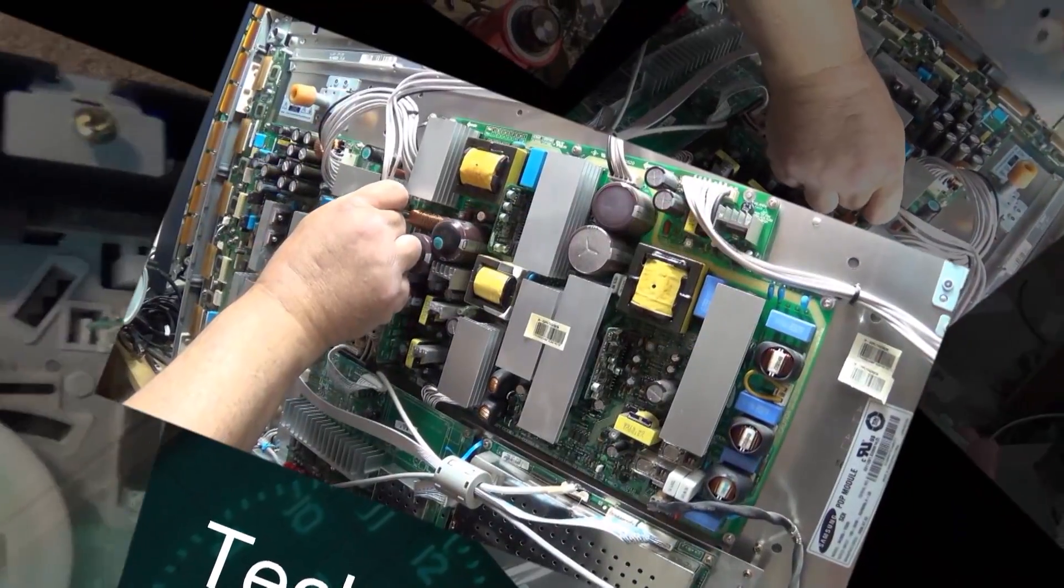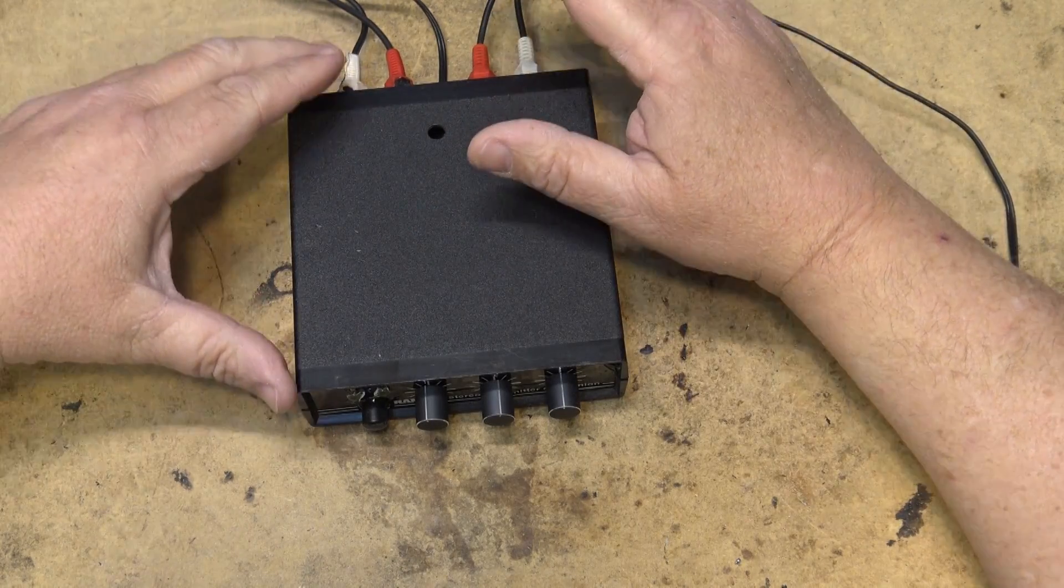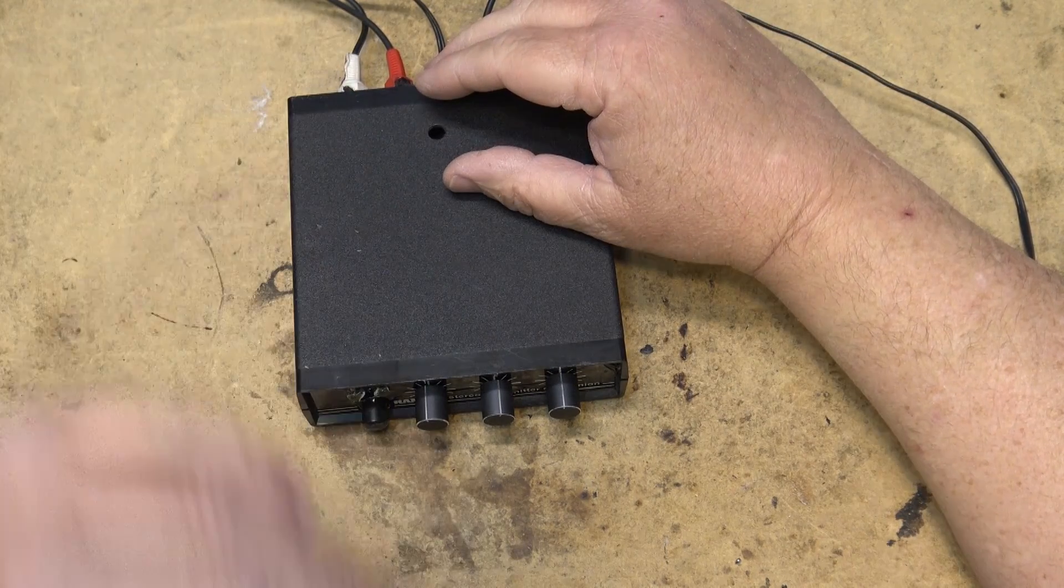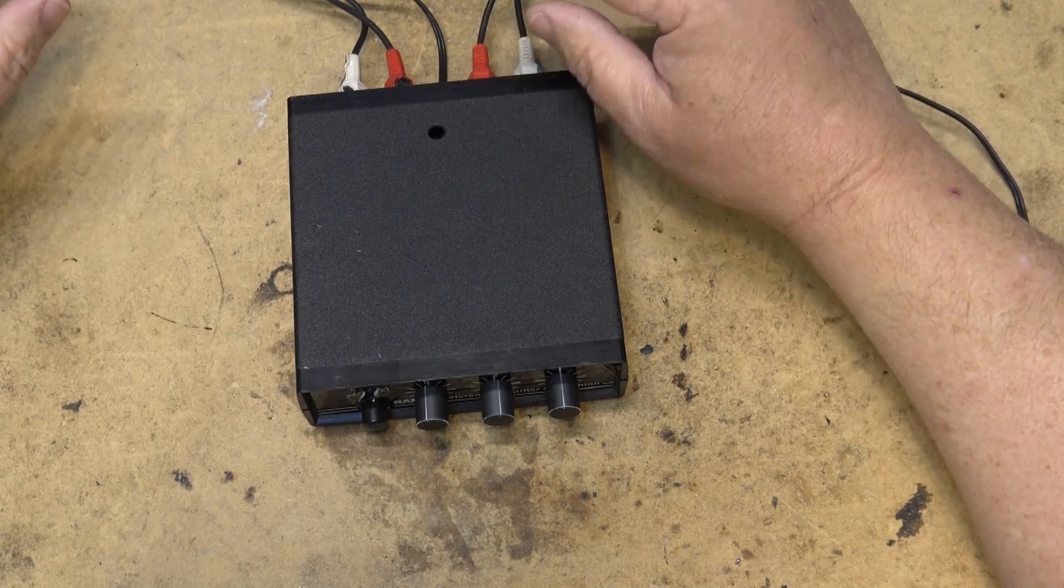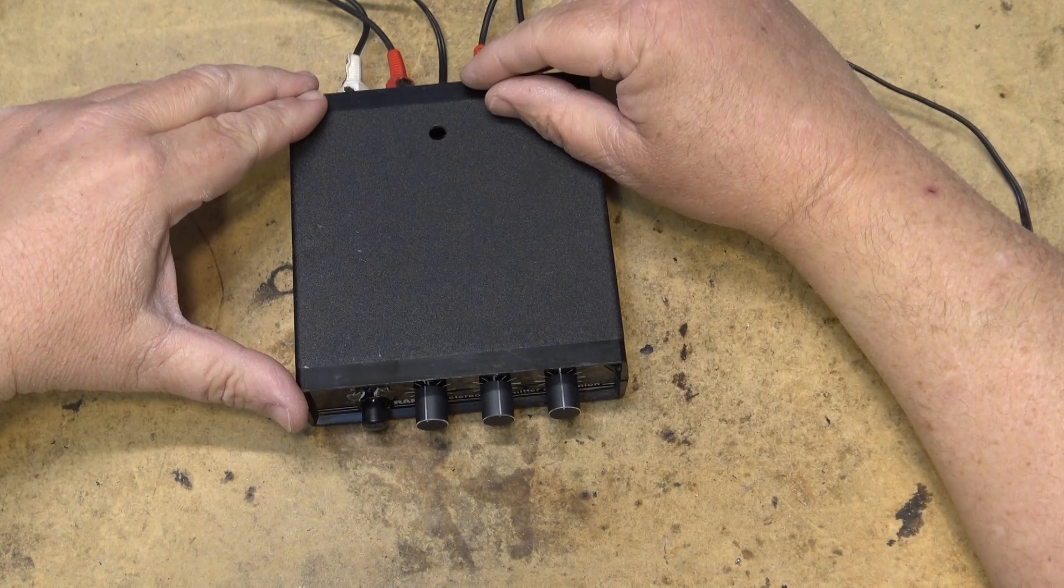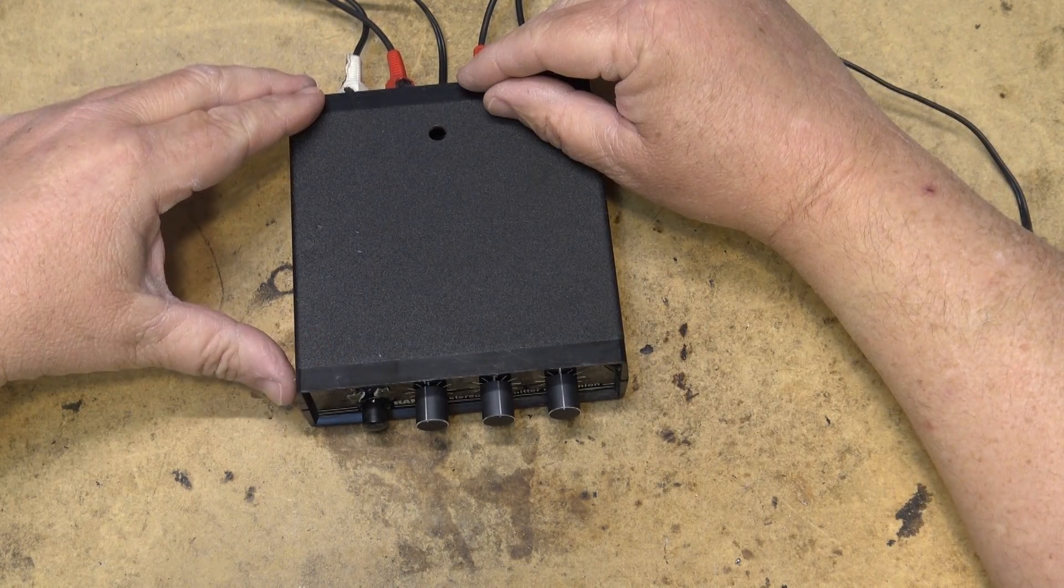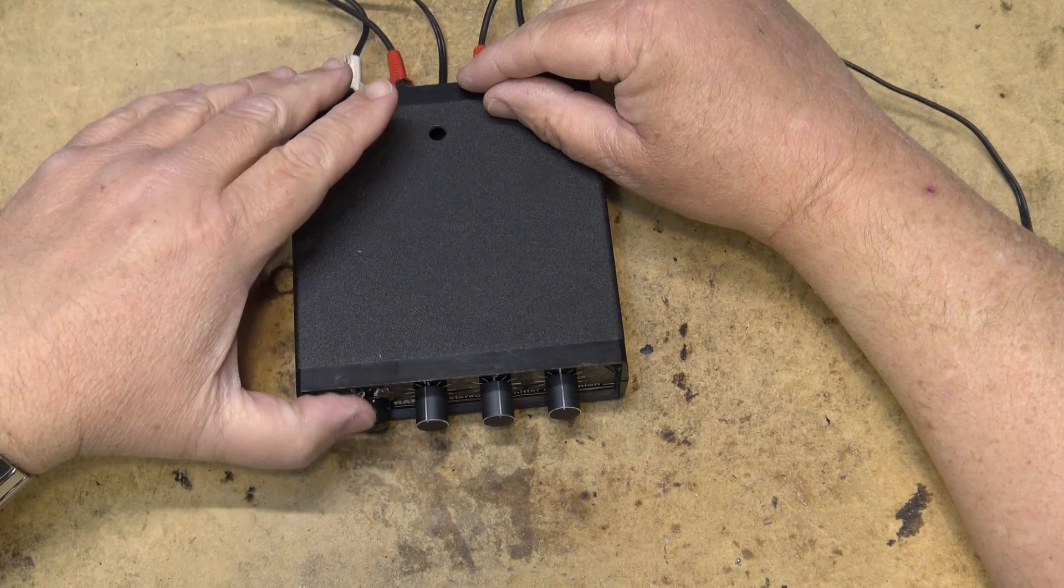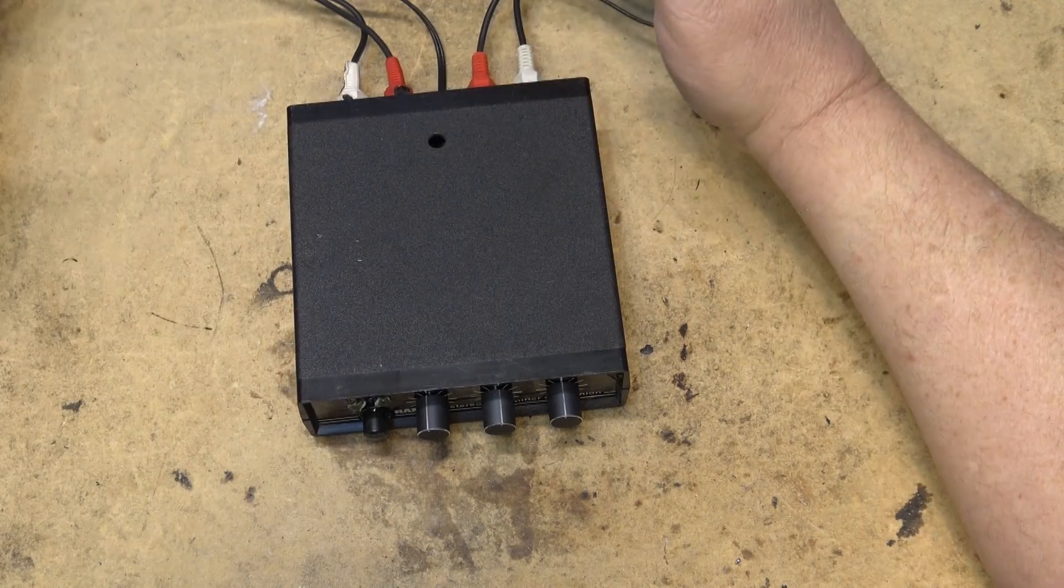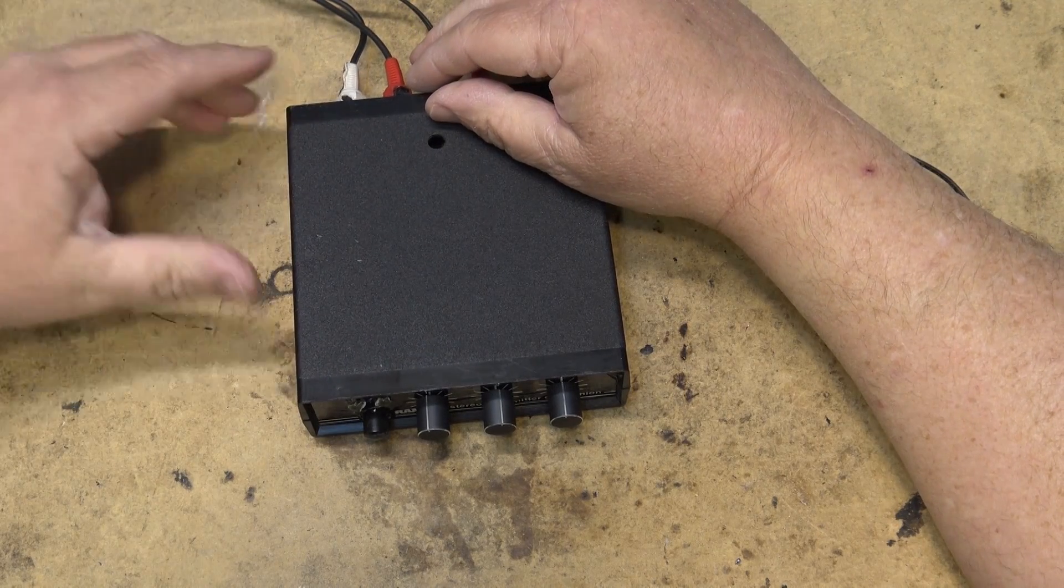What this is is called a brick wall filter. What it does is it limits the frequency response to 15 kilohertz, so it stops everything above 15 kilohertz. It also has a limiter built in to clip so the signal won't go too loud, and there's a gain for someone who's using this with a transmitter.